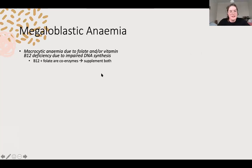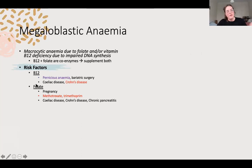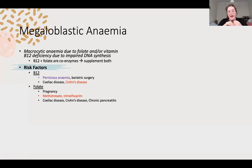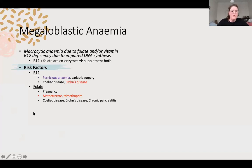Risk factors: pernicious anaemia - that autoimmune picture - is caused by autoantibodies against either parietal cells or intrinsic factor itself. Both help bind B12 in the stomach, travelling to the terminal ileum to be absorbed. Issues at the terminal ileum, with intrinsic factor, or with parietal cells will impair B12 absorption. Folate deficiency in pregnancy - if no supplements, you need a lot of folate for neural tube formation. Methotrexate is a big one - always add folate supplementation - and same with trimethoprim.